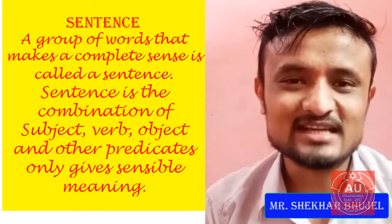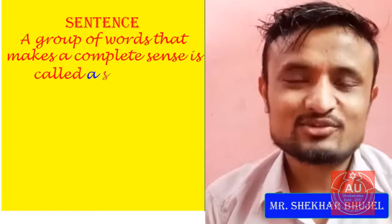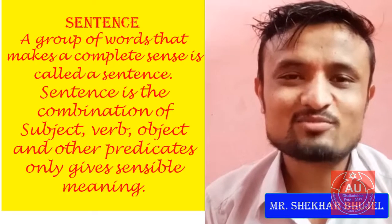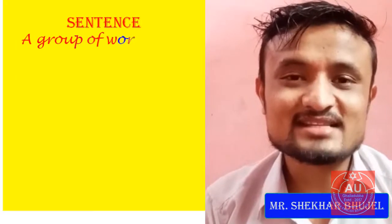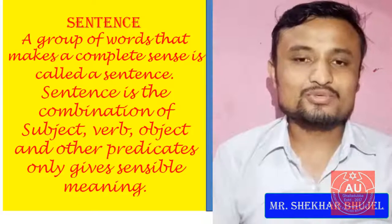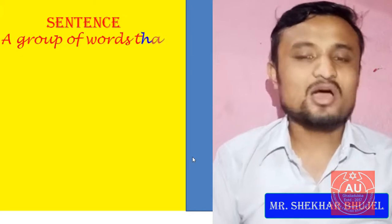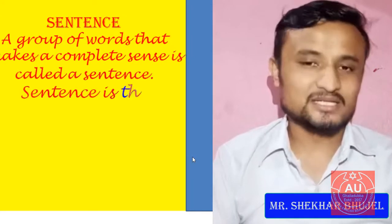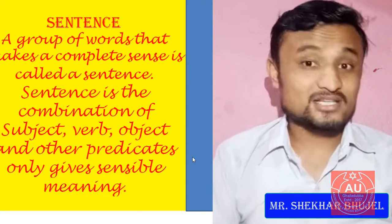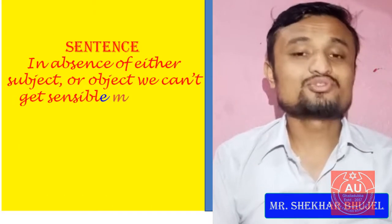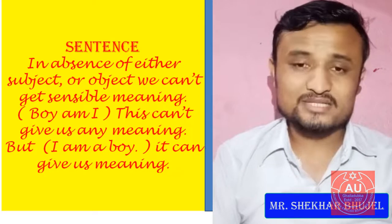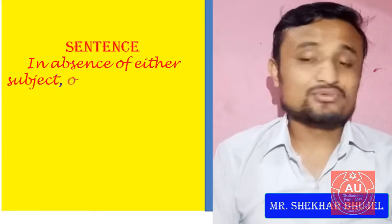A sentence is a group of words — subject, verb, object, and other predicates — that gives you sensible meaning only when there is a proper and systematic combination of these three things: subject, verb, and object. If there are only two of them, such as subject and verb only, or verb and object only, they do not give you sensible meaning.